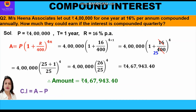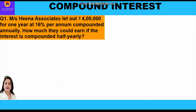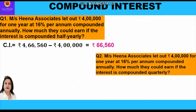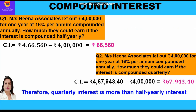This equals rupees 4,67,943.40. So the amount when compounded quarterly is rupees 4,67,943.40. Compound interest is amount minus principal: 4,67,943.40 − 4,00,000 = rupees 67,943.40. Now comparing: when compounded half-yearly, CI was rupees 66,560, and when compounded quarterly, CI is rupees 67,943.40. So clearly, quarterly interest is more than the half-yearly interest.